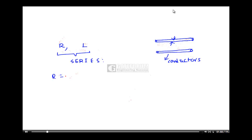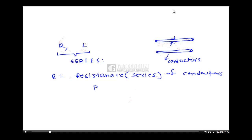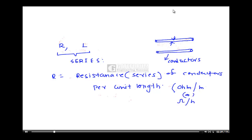R is nothing but resistance, or series resistance — the resistance of conductors per unit length. Since a transmission line is a distributed network, we define parameters in terms of per unit length. The unit for resistance is Ohm, so the unit here is Ohm per meter.